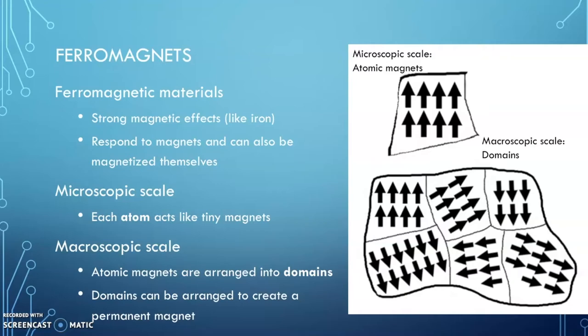So what can happen is if you put a magnetic field, say over here, all of these domains, all the little atoms and all the domains can actually line up to all point in the same direction. And when that happens, then you get your permanent magnet.